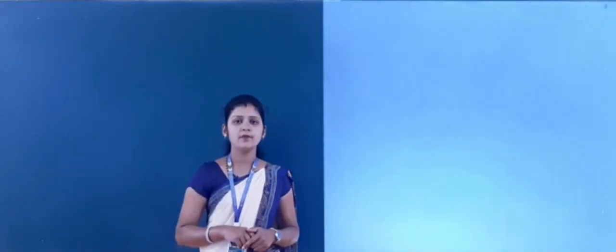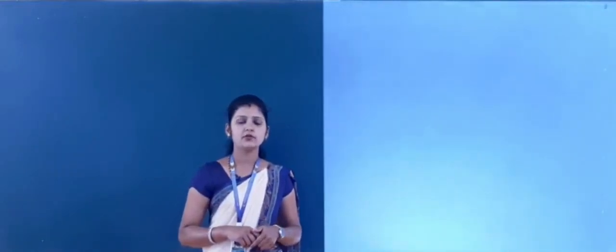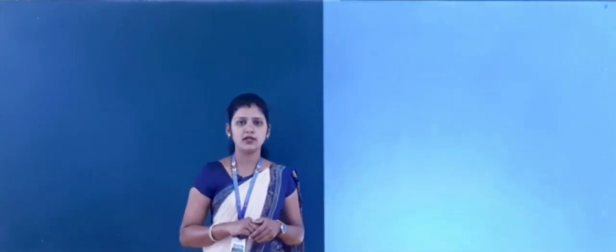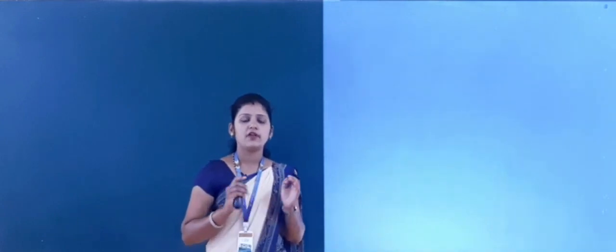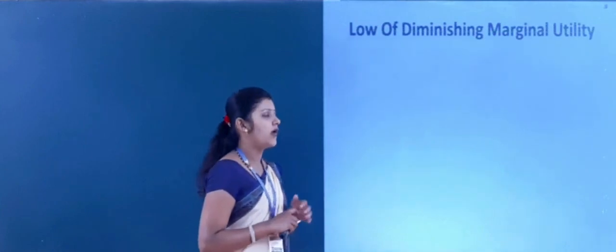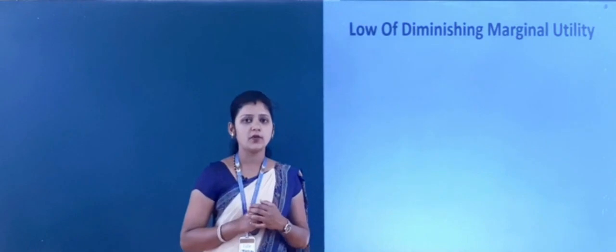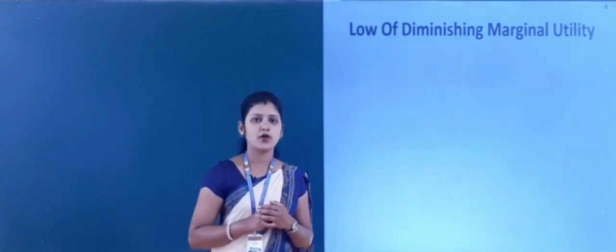Hello students, welcome. In the previous lecture, you learned three important concepts of cardinal utility analysis: first is initial utility, second is total utility, and the third is marginal utility. Now, in this class we are going to study a very interesting topic of the second chapter — the law of diminishing marginal utility. This topic is very important for your examination point of view.